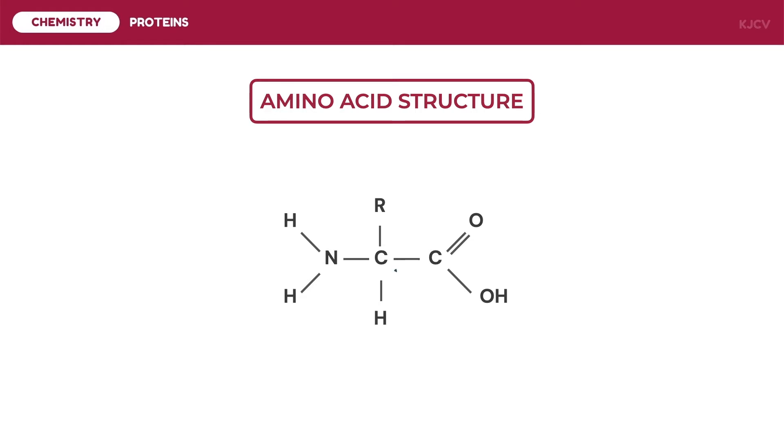The major component is the alpha carbon or the central carbon which has four attachments. First is a hydrogen atom, second an amino group which is a nitrogen bonded to hydrogen atoms, third a side chain or R group, and lastly a carboxyl group which is a carbon that is double bonded to oxygen and single bonded to a hydroxyl group.